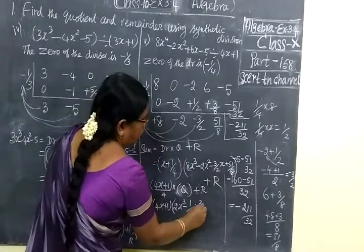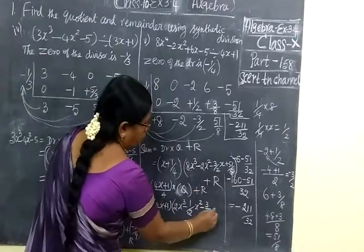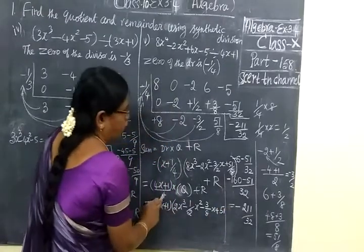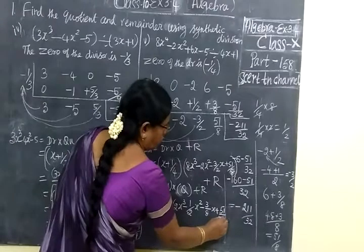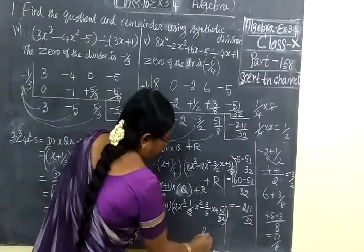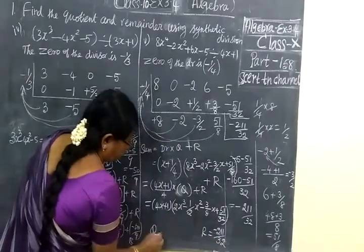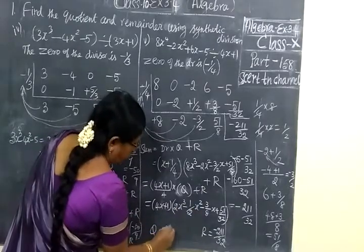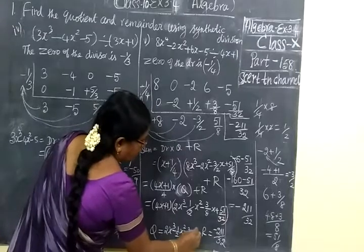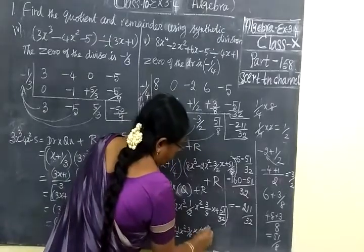So 1 by 2 x squared minus 3 by — in the 4, this is denominator of 8 — then plus 51 by — in the 4, this is denominator of 32. Then plus remainder. Reminder is minus 211 by 32. Now I am going to the quotient. This is the denominator: x squared minus x squared, then minus 3 by 8 x plus 51 by 32.